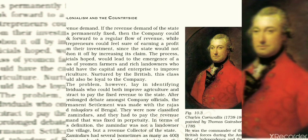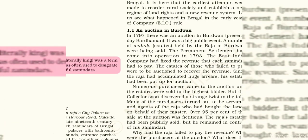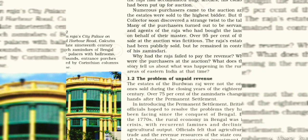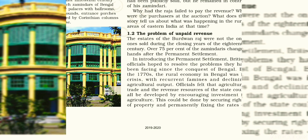Zamindars were instructed to pay 10/11th of the revenue collected from the peasants to the government, retaining only 1/11th for themselves. If a zamindar failed to make payment on time, the government could sell part of his land to recover the dues. For example, in Burdwan — present-day Bardhaman in West Bengal — zamindari land was sold at auction. However, these sales were often fictitious, as the raja would use his own people to bid and repurchase the land at a minimum price.